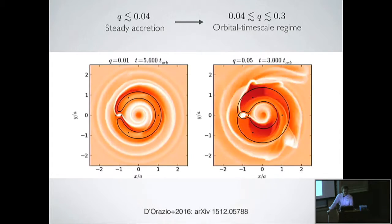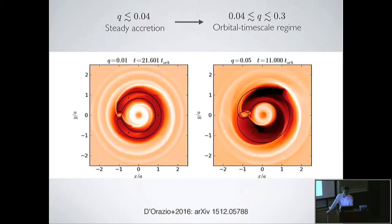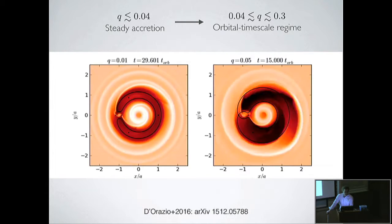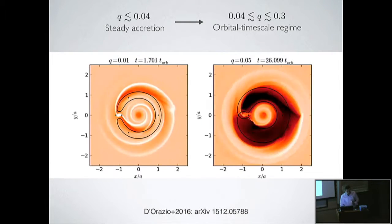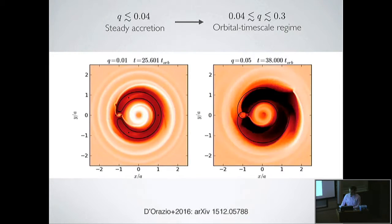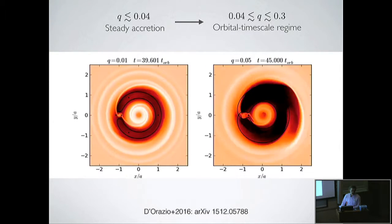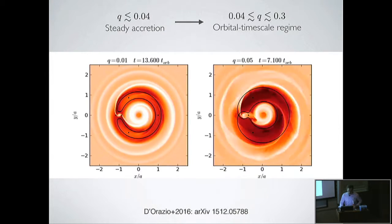Quasars are only on for maybe a few percent of the time. One way you can think about that is that mergers trigger quasars, and if mergers trigger quasars, then the lifetime of the binary is essentially the ten-to-the-seven to ten-to-the-eight year lifetime of the quasar. The fraction you'll see in the sky has to do with the residence time of the binary relative to that quasar lifetime.